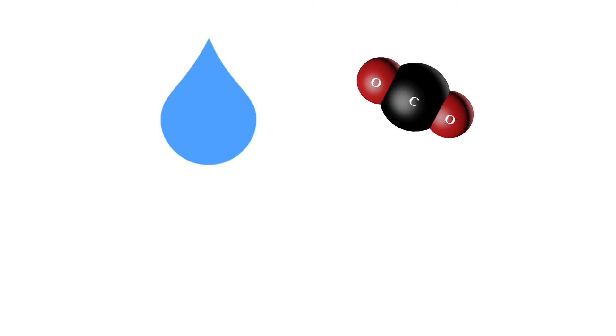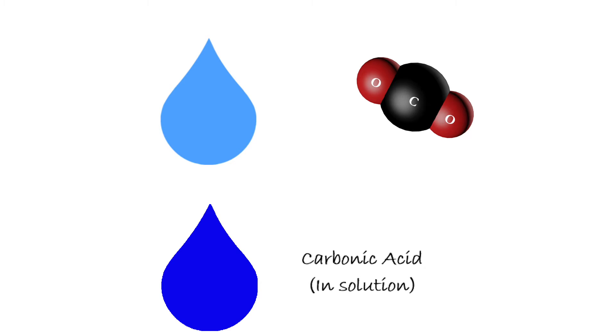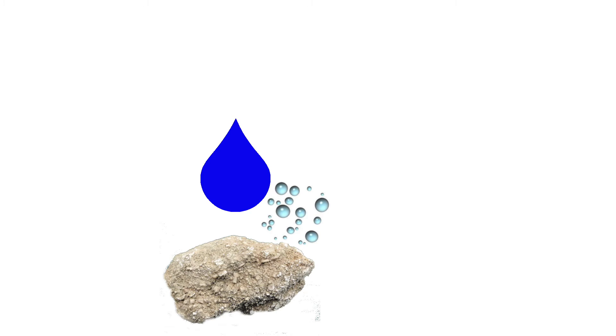Rainwater, as it passes through the atmosphere, reacts with carbon dioxide forming a weak carbonic acid, H2CO3. As it lands on the limestone, an alkaline rock mostly made of calcium carbonate, CaCO3, there is a reaction that produces a salt solution, water, and carbon dioxide. The rock appears to effervesce and the limestone is worn away by the reaction and the solution.